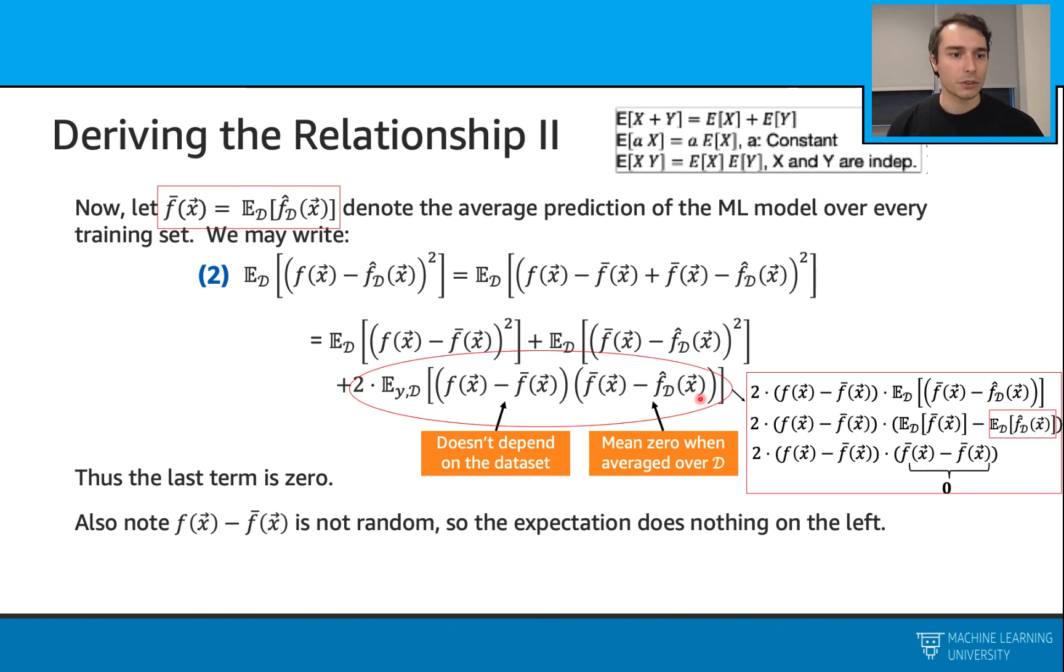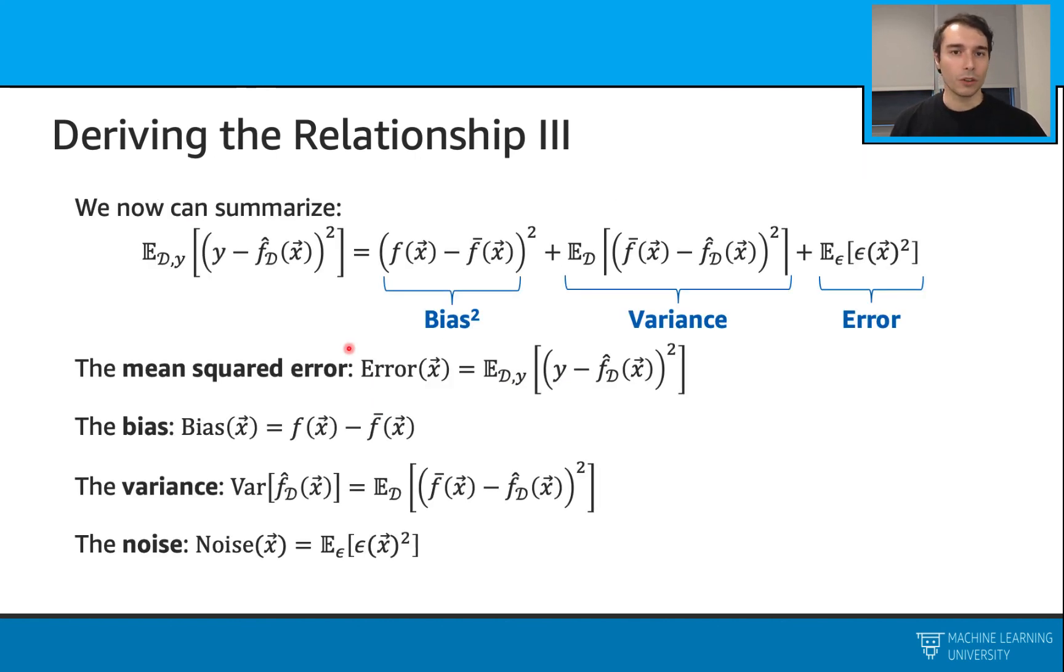Let's see what we have at the end. Overall, also carrying out my error term. This is what we have. We started with this error on the left, and we are able to derive this right-hand side. We have this bias squared, variance, and error terms.